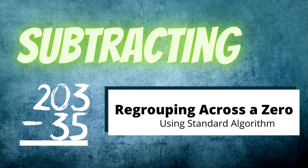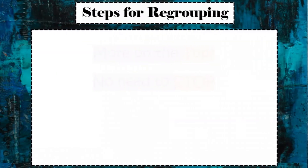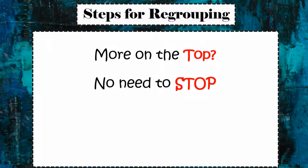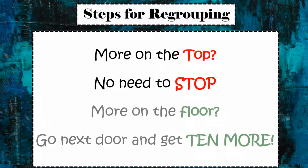What up everybody, Instructor Beats back again with another subtraction lesson. Today we are going to be taking a look at a shortcut on how to regroup across a zero. Here are the steps we've been talking about in the past couple of lessons for regrouping: more on top, no need to stop; more on the floor, go next door and get ten more. We have an awesome subtraction song to help you remember that rule.